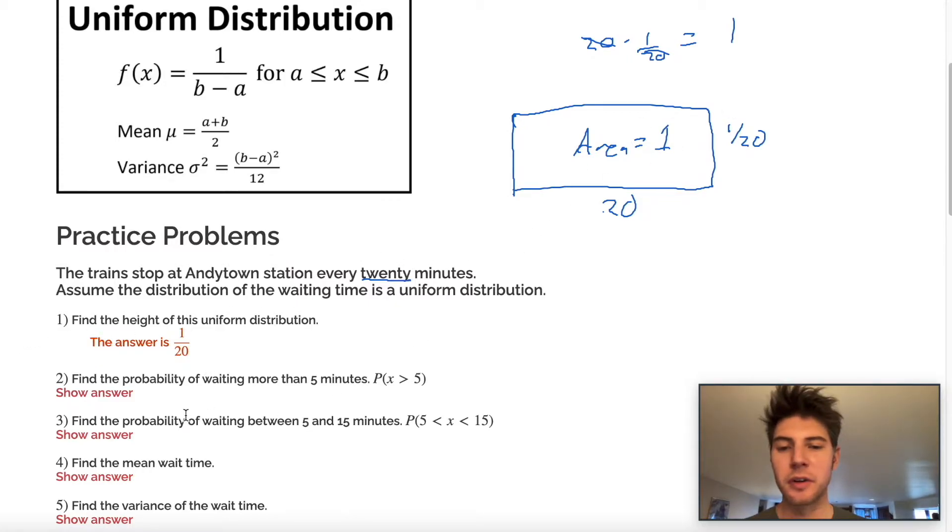So for number two, find the probability of waiting more than five minutes. We'll draw another rectangle. If we have our rectangle again, and we know that five minutes is here, we could say 10, 15, 20, and zero. And we know the height is still one over 20.